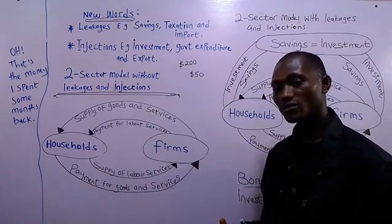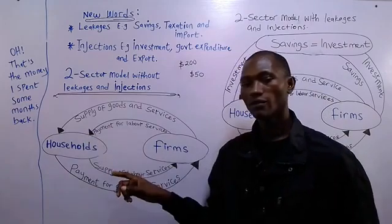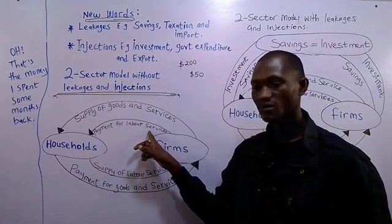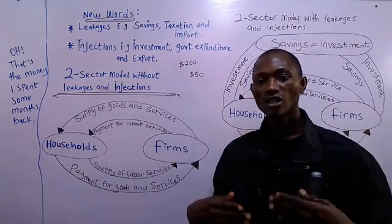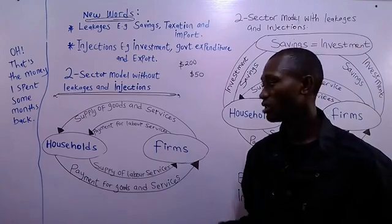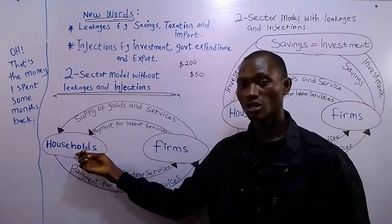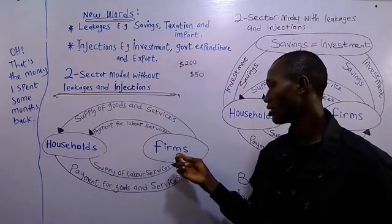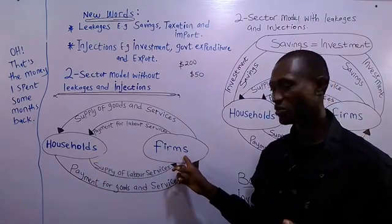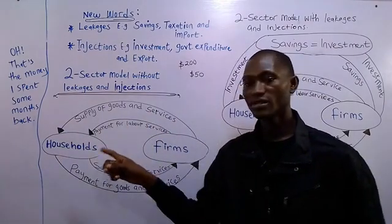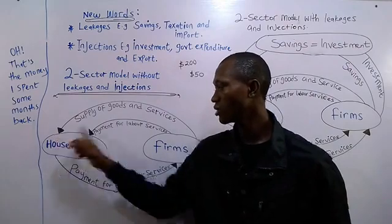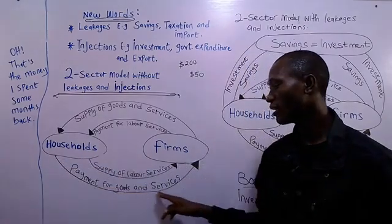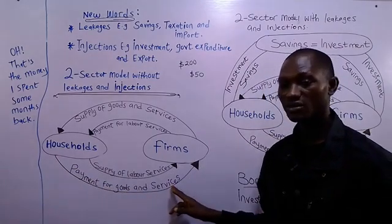Upon supplying the firm's labor services, the firm will have to pay for those labor services which the household has supplied. So the firm makes payments for labor services. Households consume, and so do business firms — consumption is constant. So for the household to consume, the household needs to buy from the business firm, since firms produce goods and services. The household will request goods and services from the business firm, and the business firm will supply goods and services to the household.